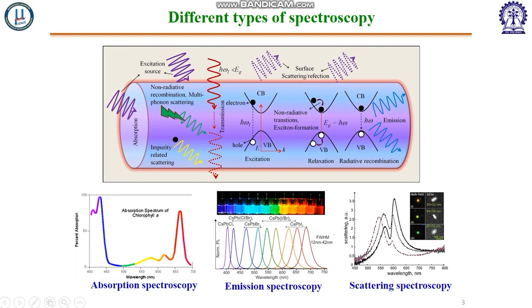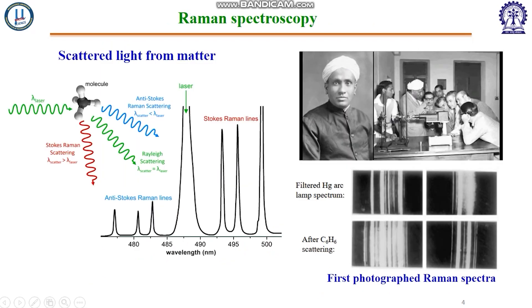These include absorption spectroscopy, emission spectroscopy, and scattering spectroscopy. Raman spectroscopy is based on inelastic light scattering in a material where the incident light interacts with the chemical bonds within the material. The principle is based on the Raman effect, named after Indian physicist C.V. Raman, who was awarded the Nobel Prize in 1930 for this discovery. When incident light is scattered by a molecule,